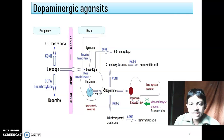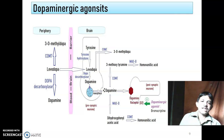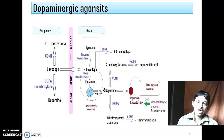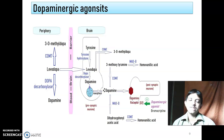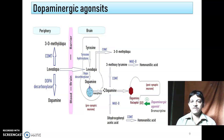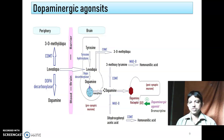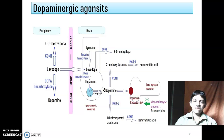Next is the dopaminergic agonist — this is important. The dopaminergic agonist is bromocriptine. This drug can directly bind with the D2 receptor and induce inhibition, just like dopamine does. When dopamine binds to D2, it causes inhibition. Bromocriptine acts as an agonist — it acts like the endogenous substance dopamine by binding with D2 and causing inhibition.